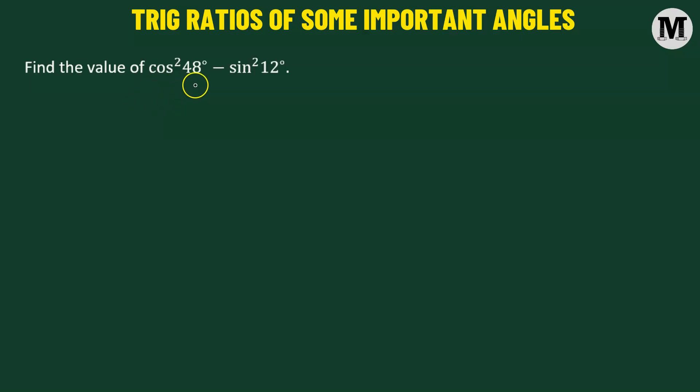Let's find out the value of cosine squared 48 degree minus sine squared 12 degree. Let us begin.